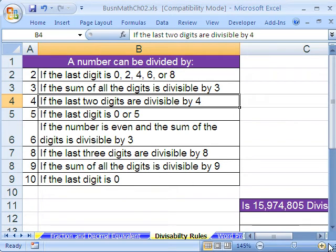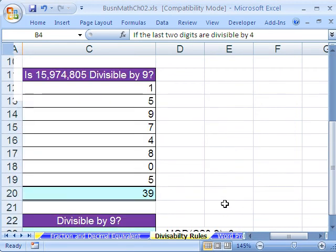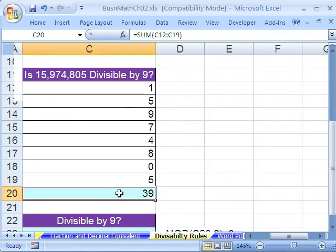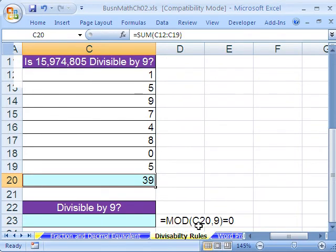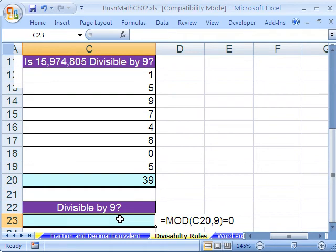So let's go see this 9 here. Let's see how we could do this. We have this number right here, 15,974,805 is divisible by 9. I just put the digits here and added them. Added them up using sum. Now there's a function, we've already seen this a few times, called mod, and it will tell us the remainder. Well, if this number is divisible by 9, it means the remainder is 0.